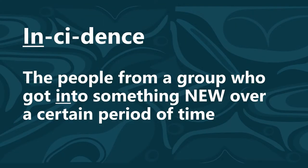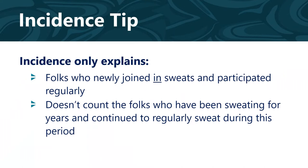An easy way to remember incidence is to think: incidence. It is the people from a group — in this example, from my community — who got into something new over a certain period of time, in this example, who started regularly attending ceremonial sweats in 2018. Incidence only counts the folks who newly joined sweats and participated regularly; it does not count the folks who have been sweating for years and continued to regularly attend sweats during this time period.